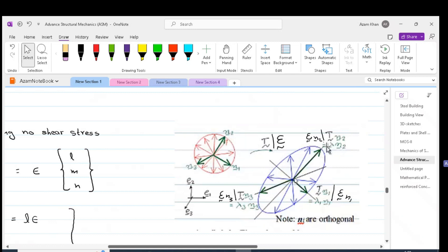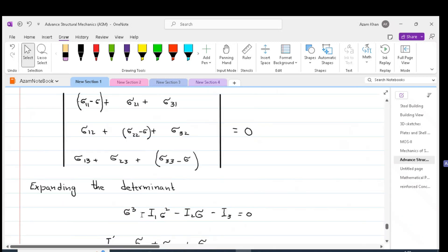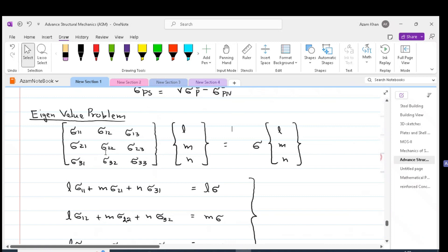So mathematically, we can say that the stress tensor when acted upon a vector will give us the vector times some scalar value.